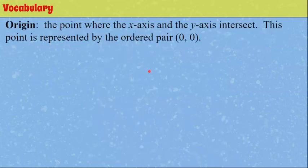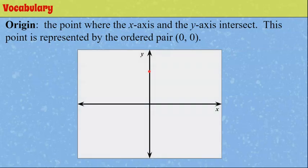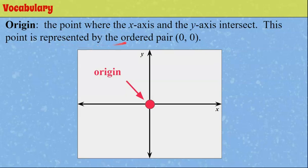Let's talk about origin. Here's our coordinate plane. Origin is the point where the x-axis and the y-axis intersect — they cross right here. This is our origin. This point is represented by the ordered pair (0, 0). The point of intersection is the origin, and it's named by (0, 0).